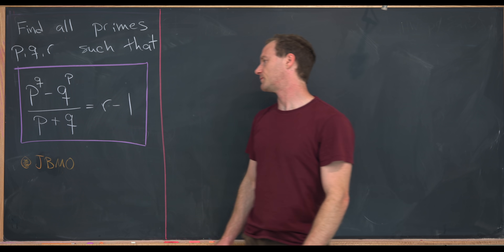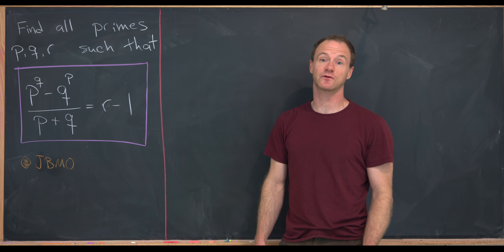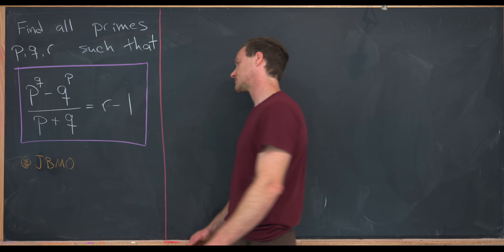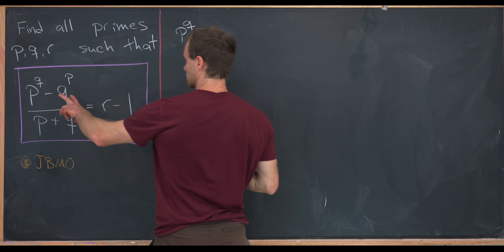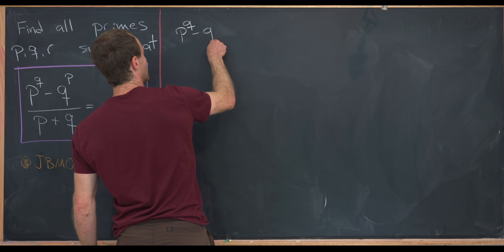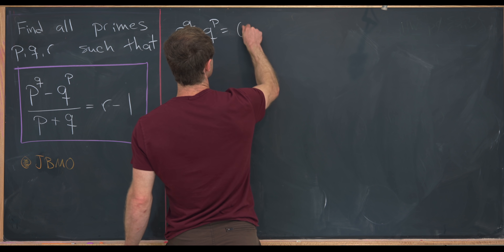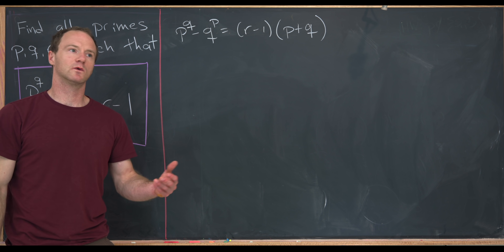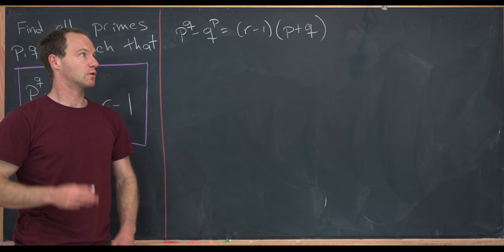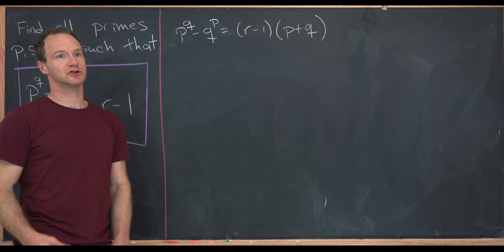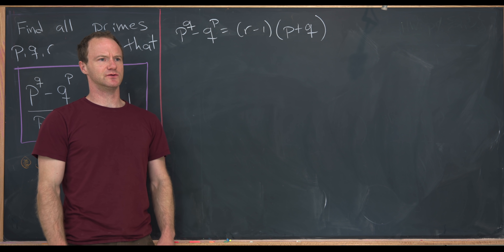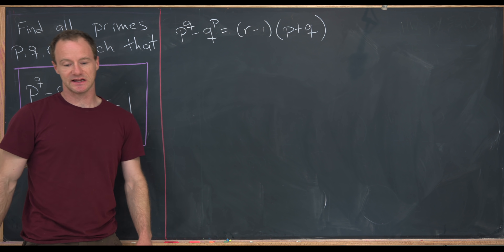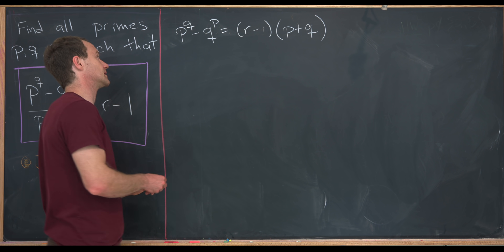I'd like to start off by reducing this so that there is no fraction anymore — just an equation involving integers instead of rational numbers. We'll do that by saying this equation is equivalent to P to the Q minus Q to the P equals R minus 1 times P plus Q. Since this is a number theory problem, we'll probably want to reduce modulo one of these primes and use standard facts like Fermat's Little Theorem and Bezout's identity. So let's start by reducing mod P.